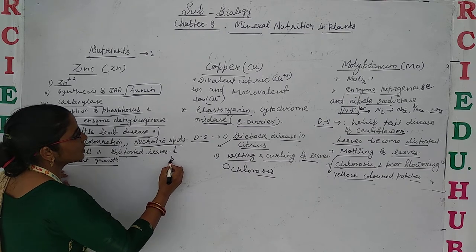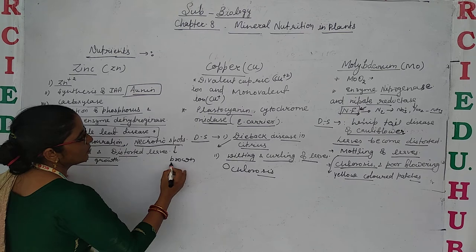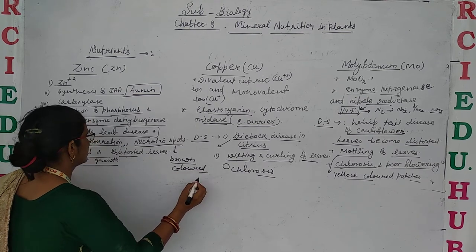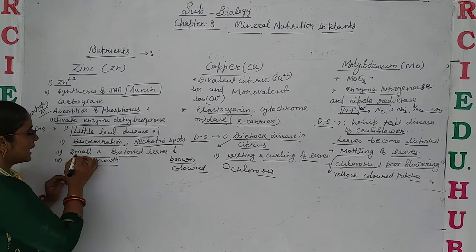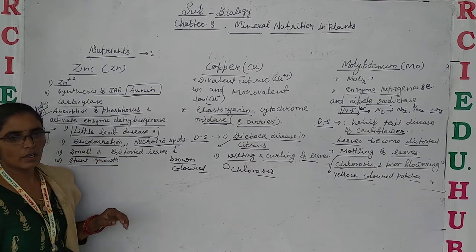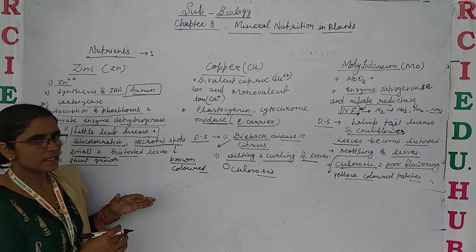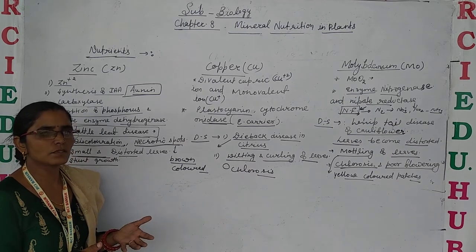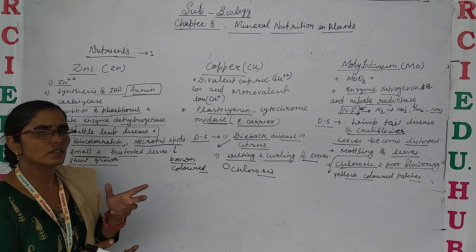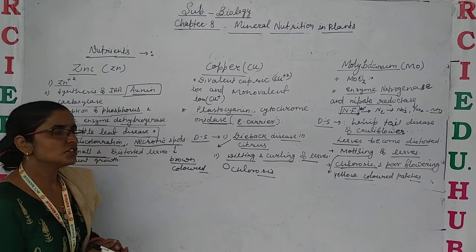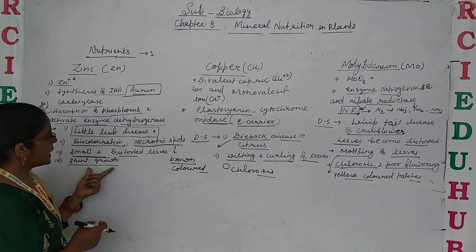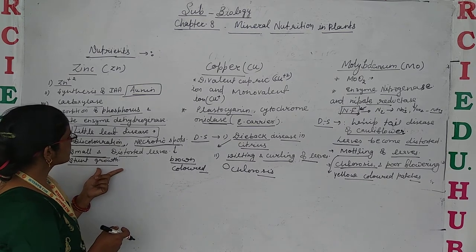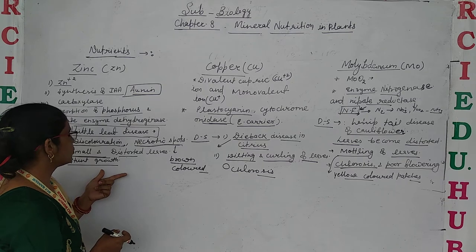Necrotic spots means brown colored spots appear on the leaves. As well as leaves become small and distorted — their shape gets changed; they do not remain as normal flat leaves but their surface gets changed. It also retards the growth; most nutrients cause stunted growth of the plants, and the same thing happens here.